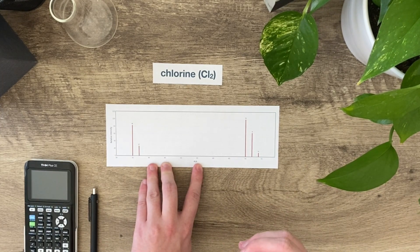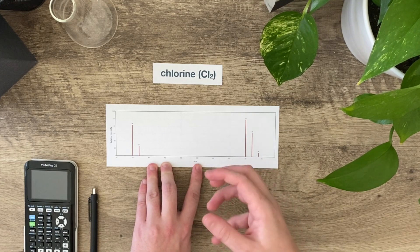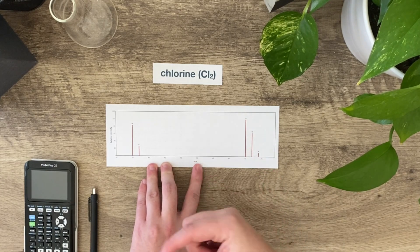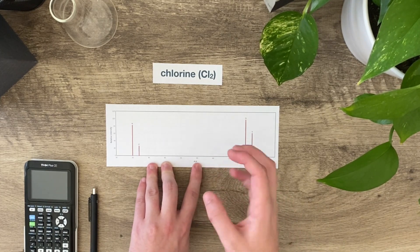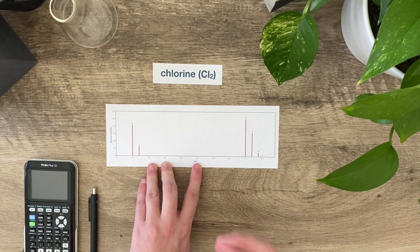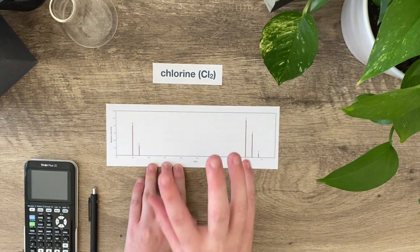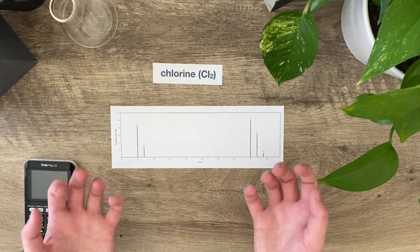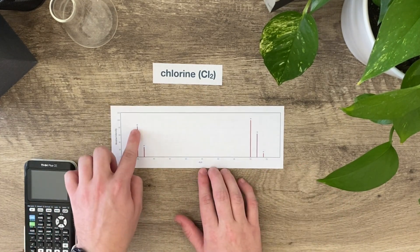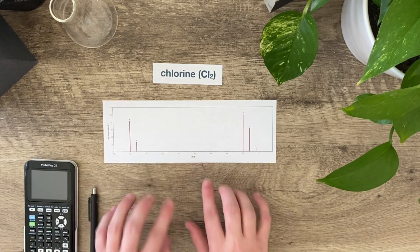Sometimes when it becomes ionized, that charge wants to be distributed very quickly through the molecule, so the molecule will separate and fragment. These two peaks are associated with fragmentation. When I put Cl2 in there, it actually separates into two Cls, which is why I have 35 and 37.